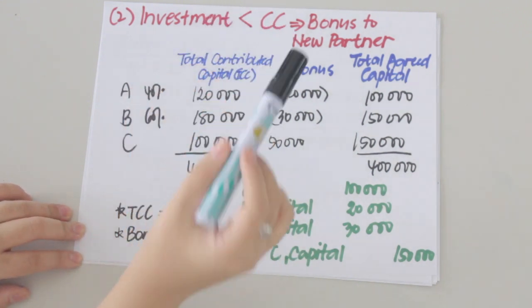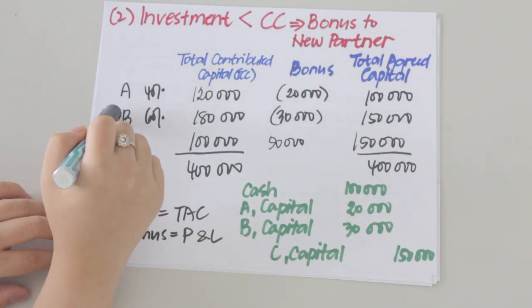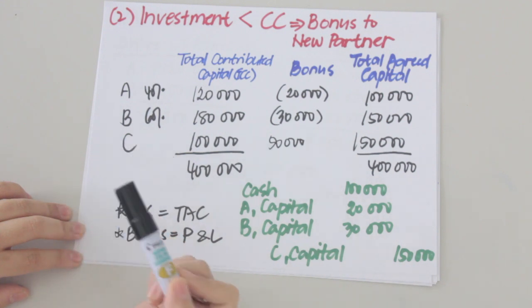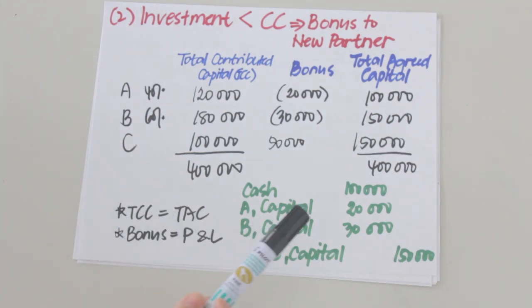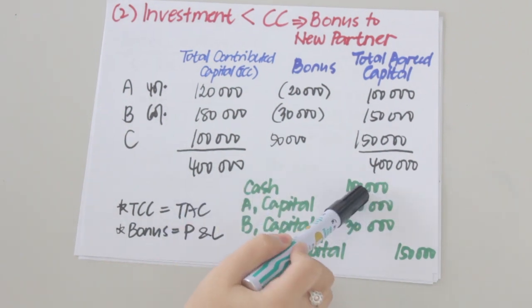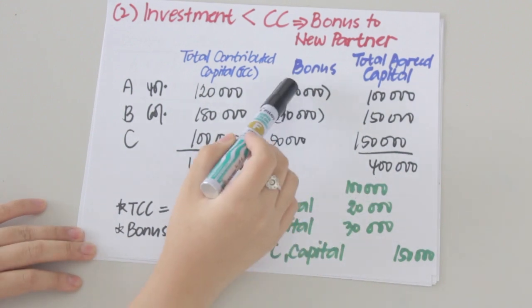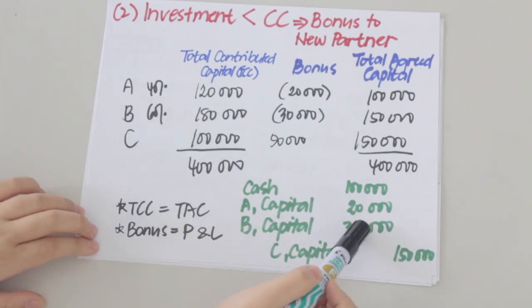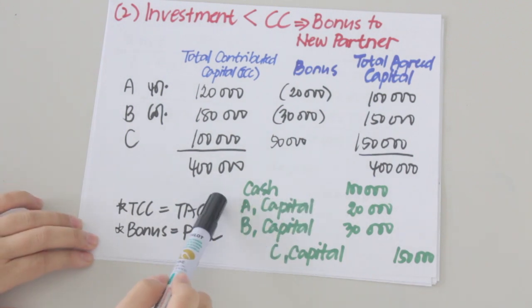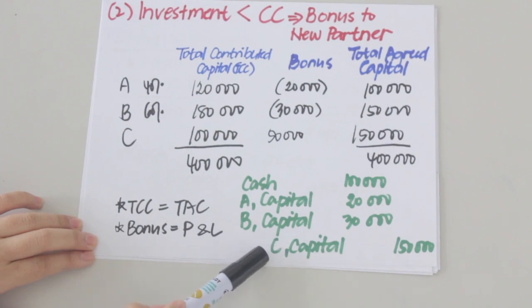When there is a bonus to the new partner, the old partners' capital balances decrease and the new partner's capital credit is greater than his actual investment. To record C's admission in this scenario, we debit cash for 100,000, debit A capital for 20,000, and debit B capital for 30,000 — debiting capital balances reduces them — and credit C capital for 150,000, equal to the capital credit granted.